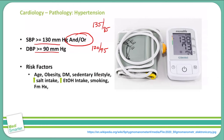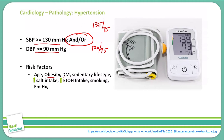Some risk factors associated with hypertension include an increase in age — the older you get, the more chance you have of having hypertension. Obesity is obviously a risk factor. Diabetes mellitus is a risk factor. A sedentary lifestyle where you're not getting a lot of activity and exercise is also a risk factor. Furthermore, an increase in salt intake is a risk, as is heavy alcohol consumption. Smoking and a family history of hypertension are also risk factors.